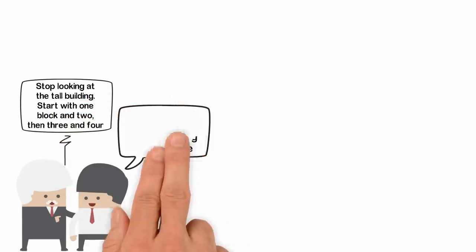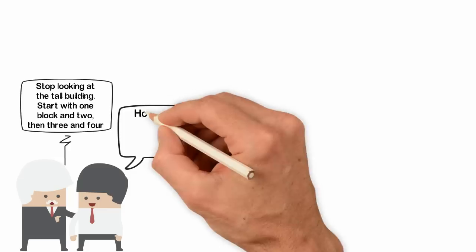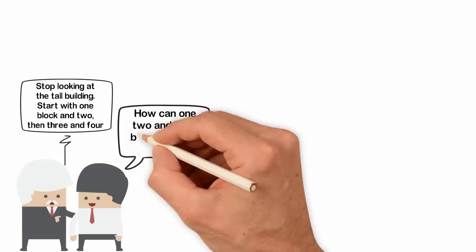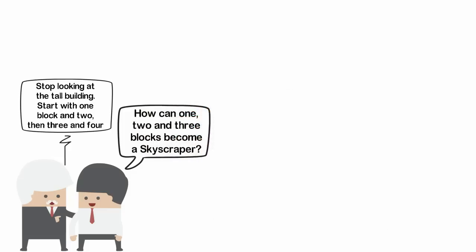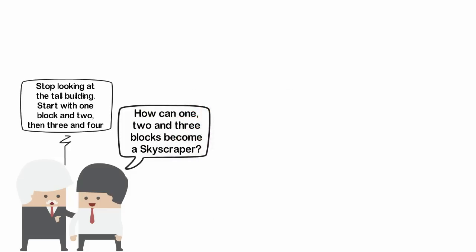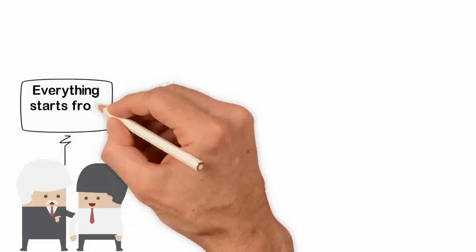The boy was unhappy by his father's advice so he asked, How can one, two and three blocks become a skyscraper? The father answered, Everything starts from zero.